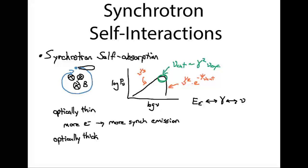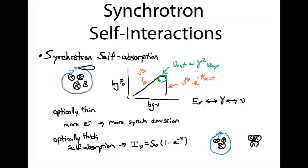Eventually, if we add enough electrons into this synchrotron mechanism, we're going to become optically thick. In an optically thick case, more electrons doesn't linearly produce more emission. This is because we have self-absorption, which means the intensity of synchrotron emission asymptotes to some effective source function. What is literally happening is that an electron accelerated by a magnetic field emits photons that hit a nearby electron spiraling around a similar magnetic field and gets absorbed. With any emission mechanism, we can always have the reverse process — if you can emit at a synchrotron frequency, you can also absorb at that same frequency.